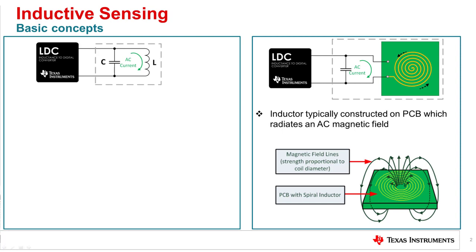The inductive coil forms magnetic field lines that are proportional to the coil diameter. This capacitor and inductor network forms an LC tank outside of the LDC device. We typically recommend using a capacitor that is NP0 or C0G grade as they are much more stable over temperature and voltage, providing better oscillation on the LC tank.